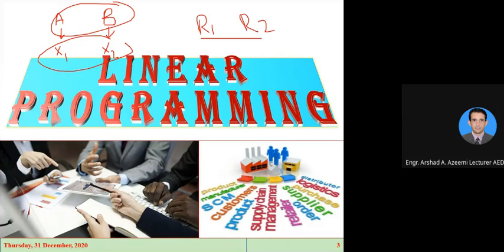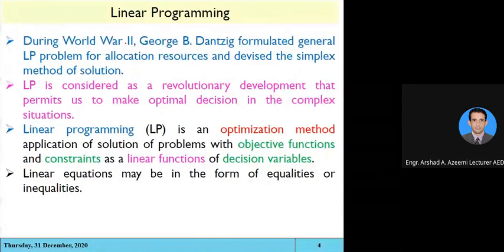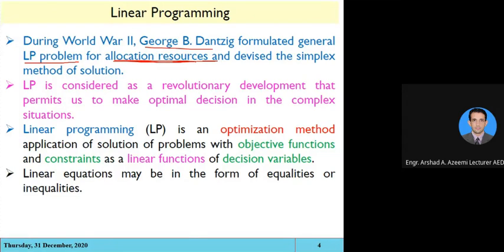The concept of linear programming mostly came after World War II, in which George formulated the general linear programming problem for allocation of resources. In economics, we are dealing with resources — physical resources, human resources, and financial resources. If you are allocating these resources, how will you allocate them to get the maximum benefit? That is done through linear programming.